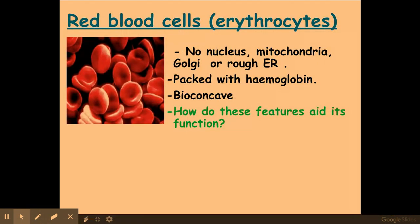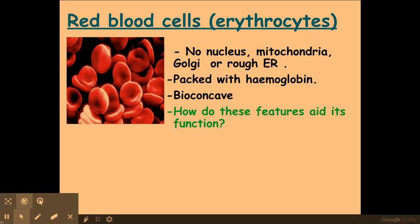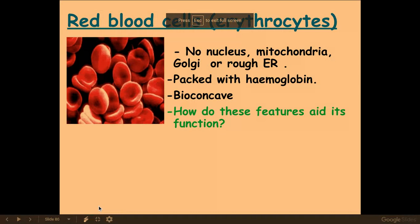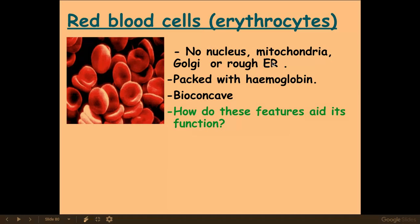The first one we need to be aware of are red blood cells, also known as erythrocytes. These erythrocytes are packed full of haemoglobin and they also have this biconcave structure. They have so much haemoglobin because they have no nucleus, no mitochondria or rough ER, so they have space to have lots of haemoglobin.